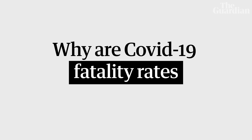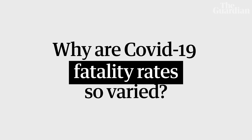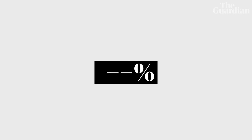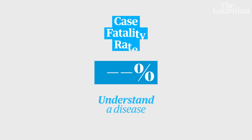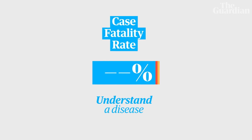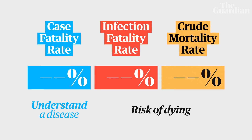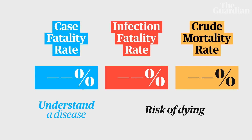So why are COVID-19 fatality rates so varied? Well, firstly, there's not just one rate. There's one that helps you understand an outbreak, and then there are two more which will tell you the risk of dying. Let's take a look at how they work.